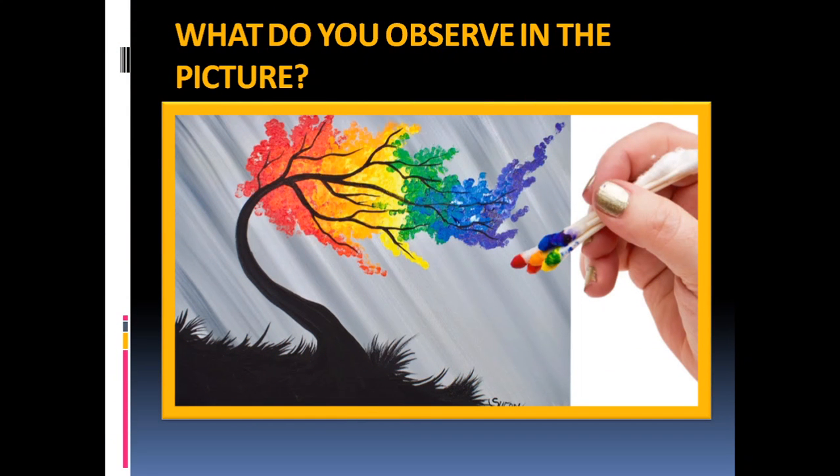What do you observe in this picture, children? You can observe an art being done. There are different artworks we can do. The one who does the art is called an artist.